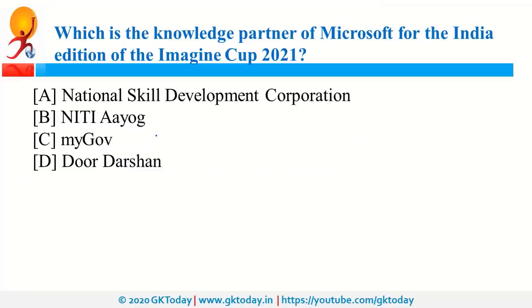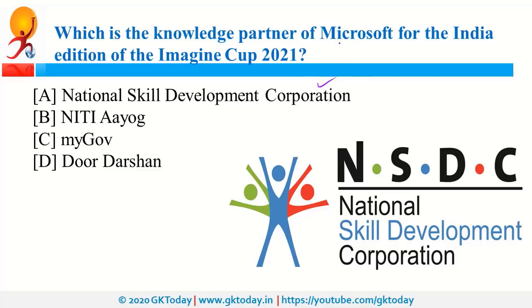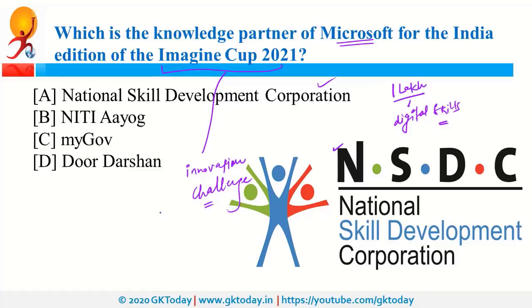Which is the knowledge partner of Microsoft for the India edition of Amazing Cup 2021? NSDC is the knowledge partner of Microsoft for this Amazing Cup 2021. This Amazing Cup is an innovation challenge organized by Microsoft. NSDC stands for National Skill Development Corporation. Recently, Microsoft and NSDC collaborated to empower one lakh women with digital skills.